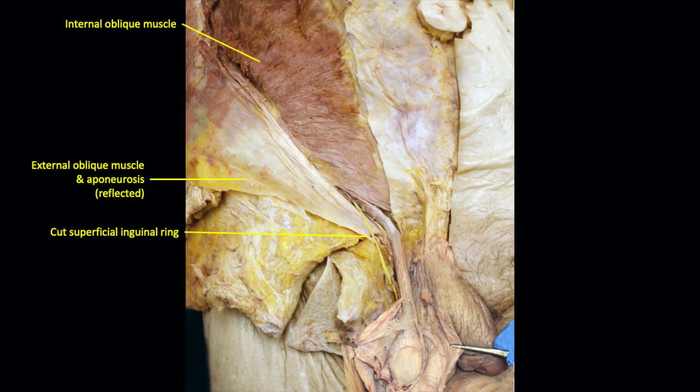Reflecting the external oblique exposes the second muscle layer — the internal oblique. The internal oblique takes its origin from approximately two thirds of the inguinal ligament. In the male, small fibers arise from the internal oblique and travel to the spermatic cord; these are the cremaster muscles, responsible for the cremasteric reflex. Females do not possess the cremaster muscle.